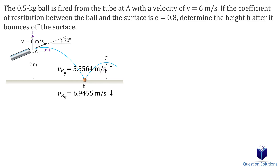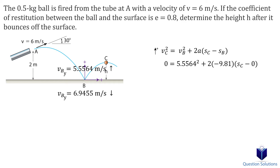The last step is to use the same kinematics equation as before to figure out the maximum height reached. We will pick up to be positive. One thing to note is that when the ball reaches maximum height, its vertical velocity will be 0 since it's about to come back down. Keeping this in mind, let's plug in the values we know. We found the vertical component of velocity at point B, so that's the speed at which the ball bounces up, and SB is 0 since that's our origin for this equation. Let's solve for the height, which gives us 1.574 meters.